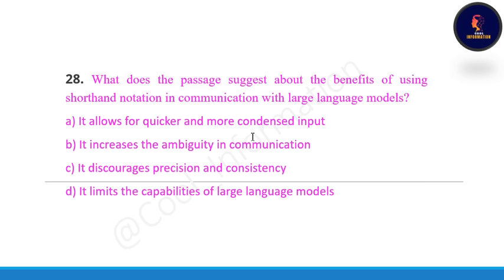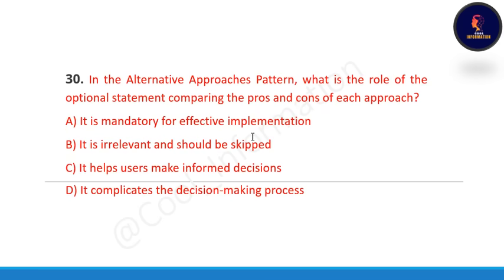Next question: What does the passage suggest about the benefit of using shorthand notation in communication with large language models? The correct option is E — it allows for quicker and more condensed input. Last question: In the alternative approach pattern, what is the role of the optional statement comparing pros and cons of each approach? The correct option is C — it helps users make informed decisions.